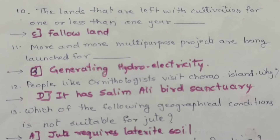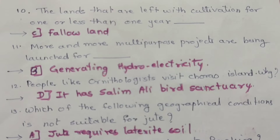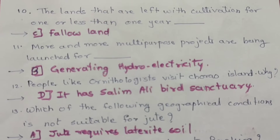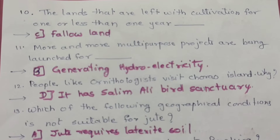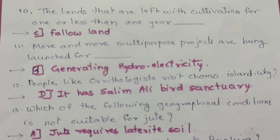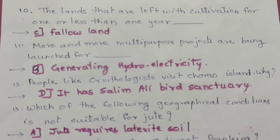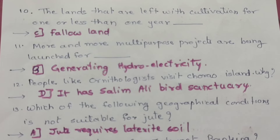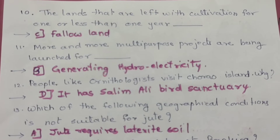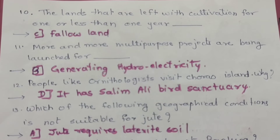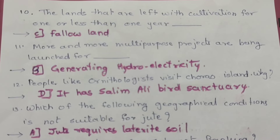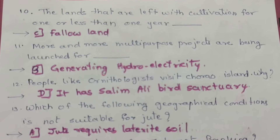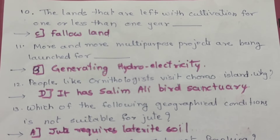Question 10: Land that is left uncultivated for one or less than one year — the correct option is C — fallow land. Question 11: More and more multipurpose projects are being launched for — the correct option is B — generating hydroelectricity.